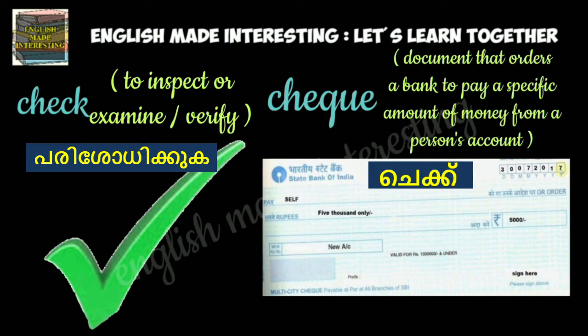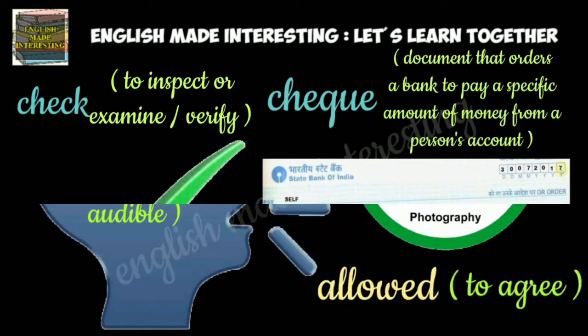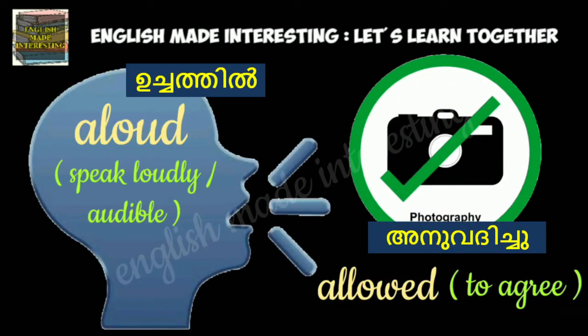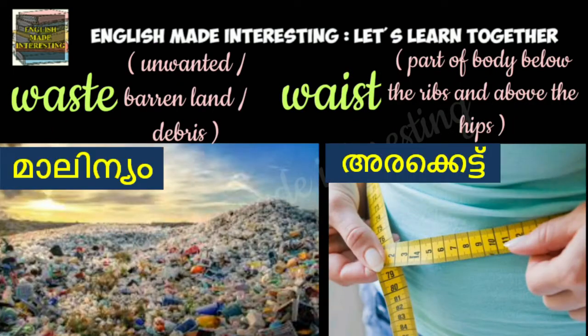H-A-R-E, 'hare', is an animal. C-H-E-C-K, 'check', means to inspect, examine or verify. C-H-E-Q-U-E, 'cheque', is the document that orders a bank to pay a specific amount of money from a person's account. A-L-O-U-D, 'aloud', which means to speak loudly or to be audible. A-L-L-O-W-E-D, 'allowed', which means to agree to something. W-A-S-T-E, 'waste', which means unwanted or barren land or debris. W-A-I-S-T, 'waist', which means the part of the body below the ribs and above the hips.